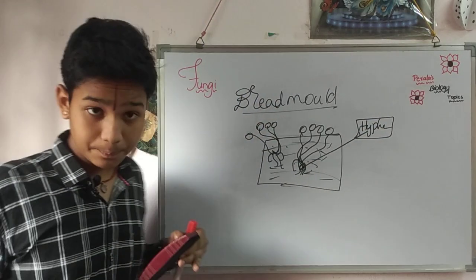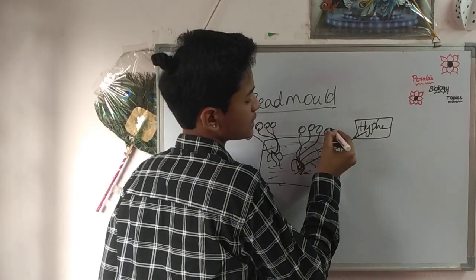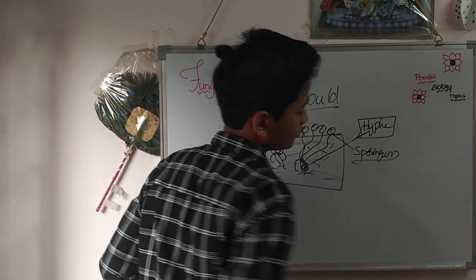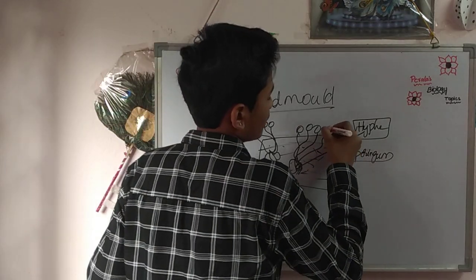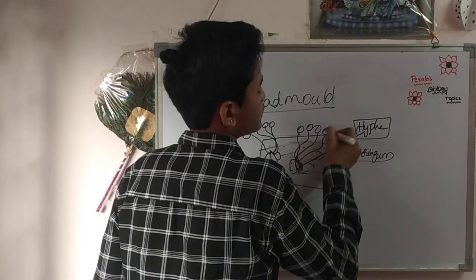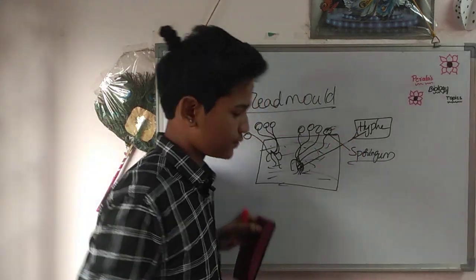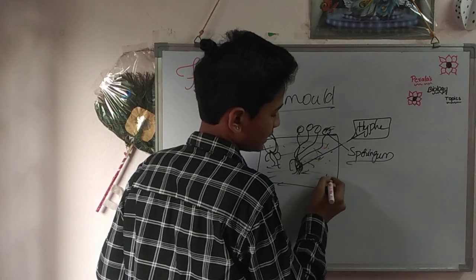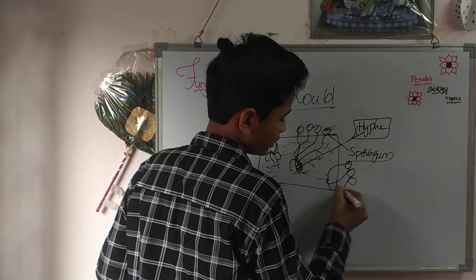At the top of the hyphae there are some spore structures known as sporangia. After the spores have developed, they are released out into the atmosphere and land on another place — another piece of bread — where they multiply and form new hyphae.